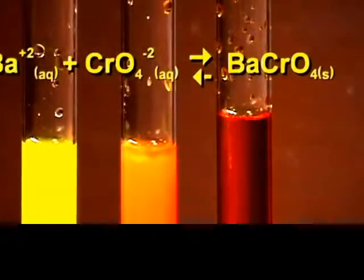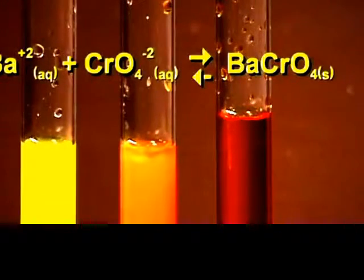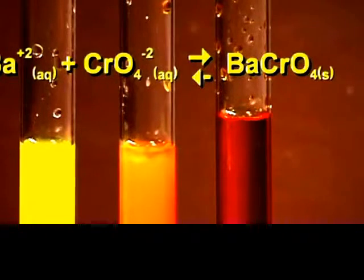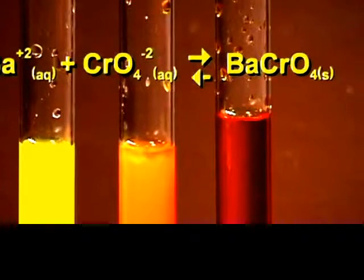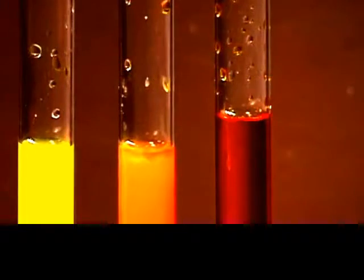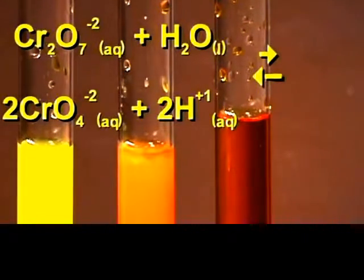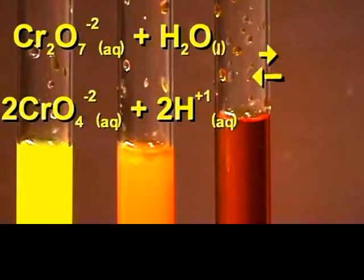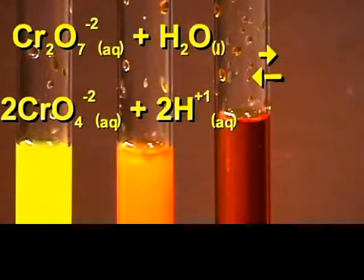In the first tube, there is a high concentration of chromate ion, so we get a large amount of precipitate. In the second tube, we only get a small amount of precipitate. This indicates that the equilibrium lies very far towards the dichromate side, and only a small amount towards the chromate side.